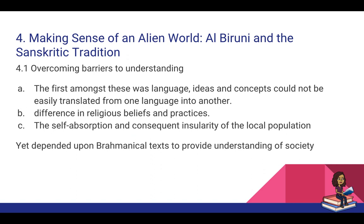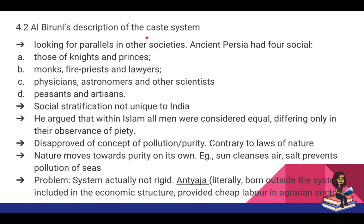The most important limitation of Al-Biruni's work is that he largely depended on Brahmanical texts to understand the society he'd come to visit. Al-Biruni also talks extensively about the caste system, which really struck him as interesting. He starts by looking for parallels in other societies, noting that in ancient Persia there were also four major social divisions: knights and princes; a priestly class of monks, fire-priests, and lawyers; physicians, astronomers, and scientists; and at the bottom, peasants and artisans. He argues that social stratification was not unique to India but present the world over.